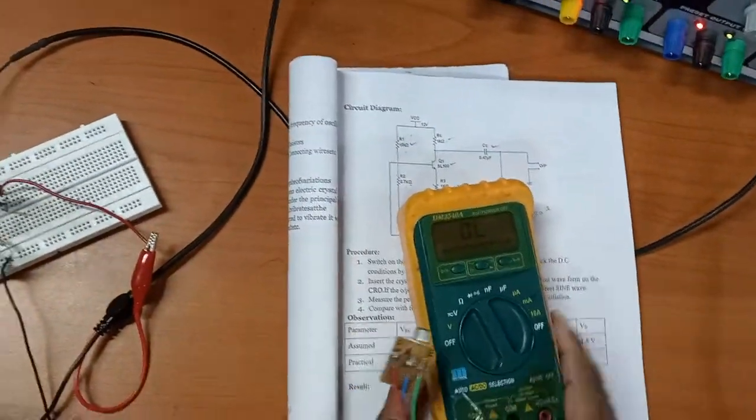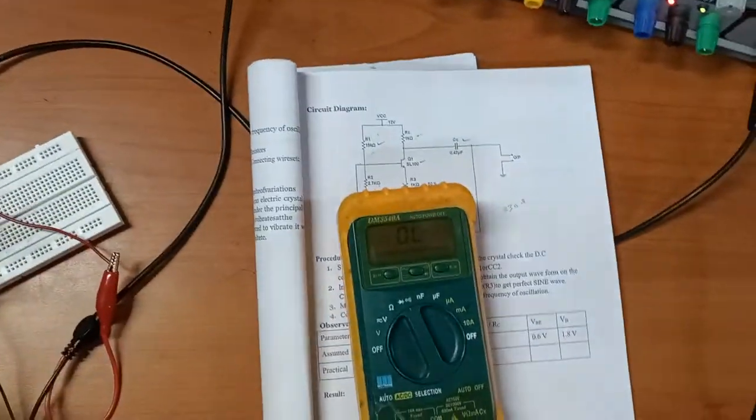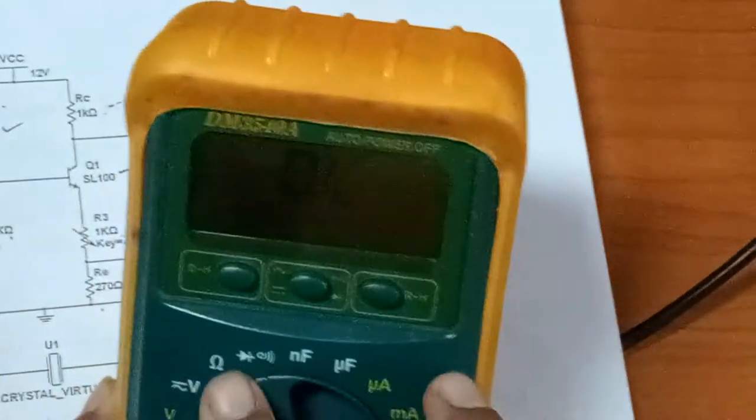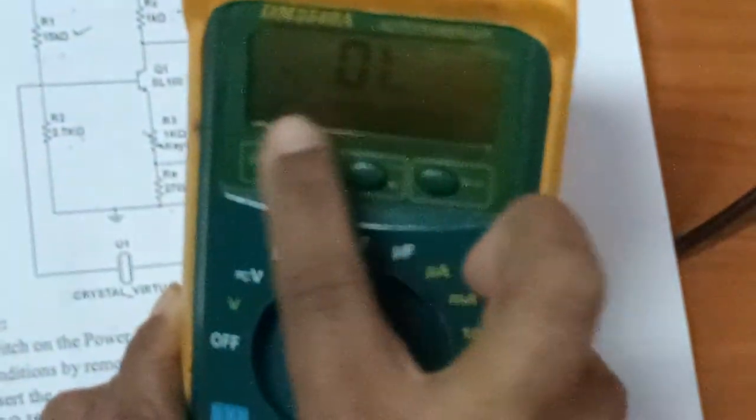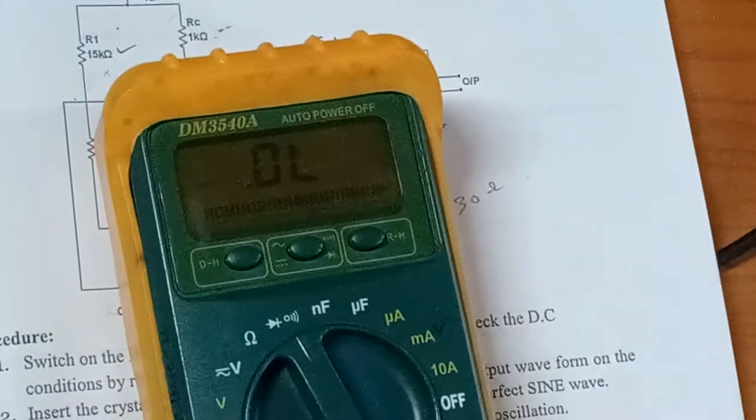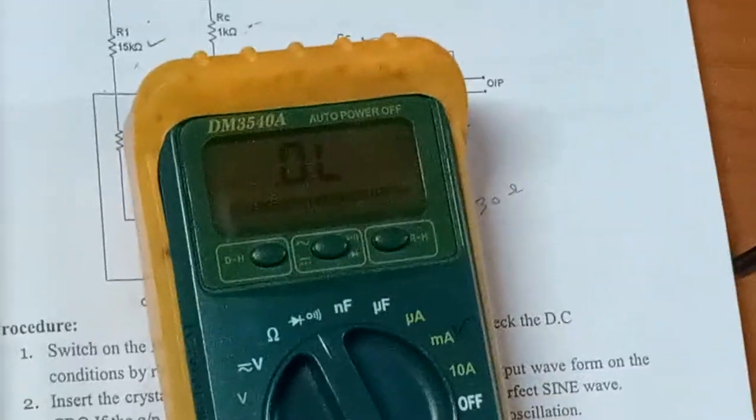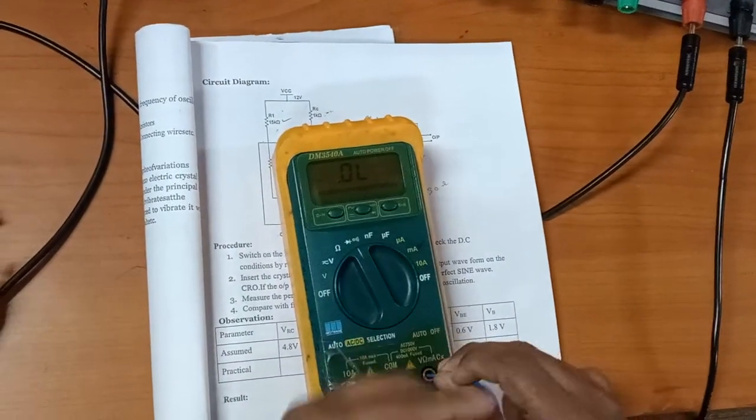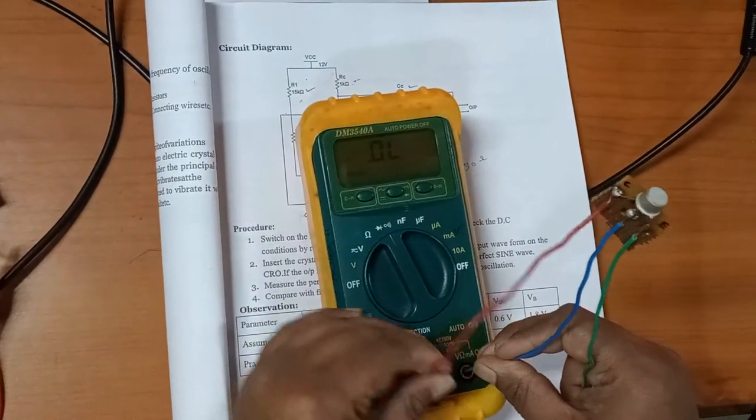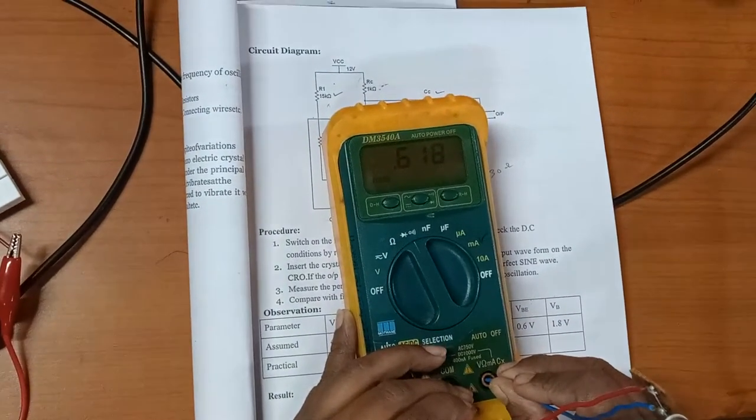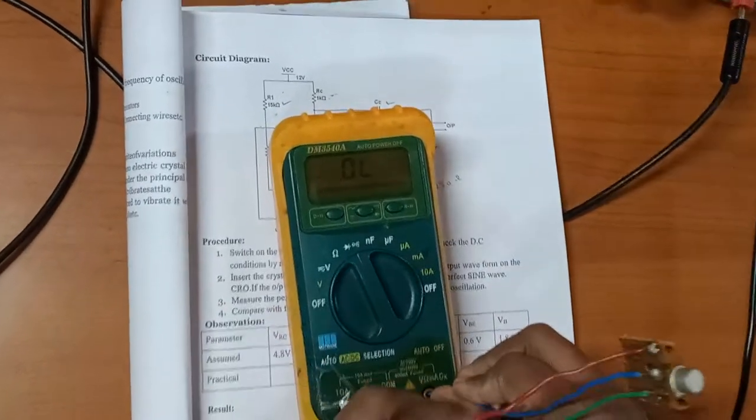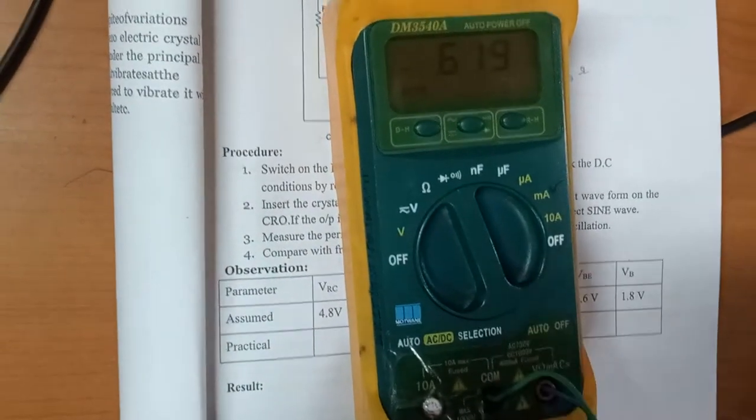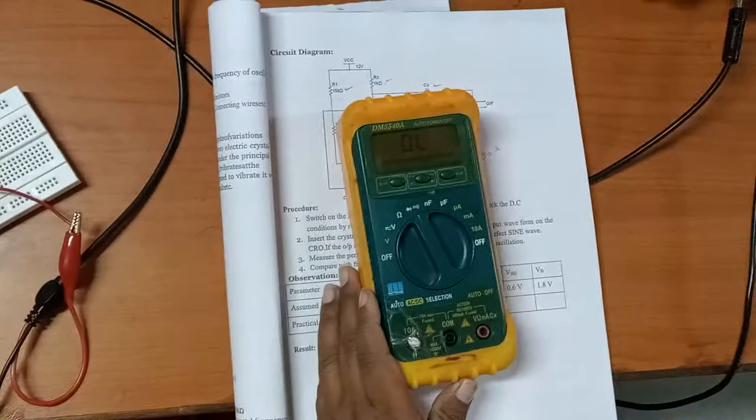On the multimeter, keep the knob in diode position. Press to check the diode cutting voltage. For NPN, P is positive, so base connects to positive terminal and N connects to negative terminal. You can see the cutting voltage of the diode on the multimeter. Check both junctions to verify the transistor will work.